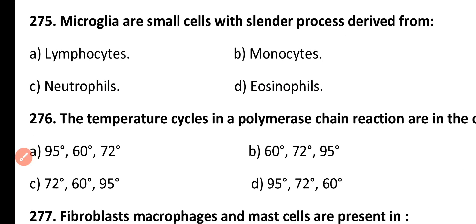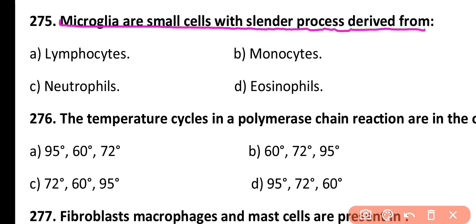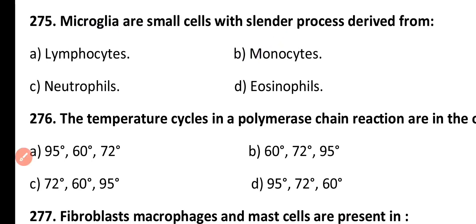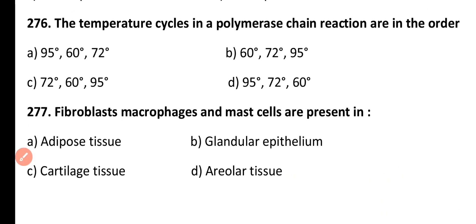Question 275. Microglia are small cells with slender processes derived from: lymphocytes, monocytes, neutrophils, or eosinophils. Correct answer is Option B. Microglial cells are the macrophages of the central nervous system, derived from monocytes, and provide protection to the CNS.